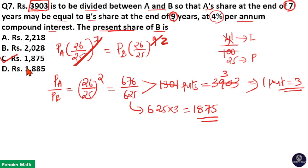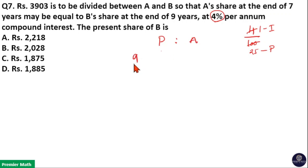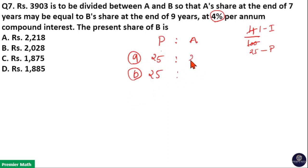If you don't know this formula, you can find the answer without using it. At 4% rate of interest, 25 parts is the principle and 1 part is the interest, so 26 parts is the amount. Take the ratio between principle and amount for A and B: principle is 25 parts per year and amount is 26 parts per year for both A and B.